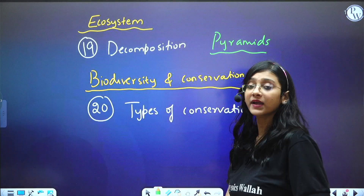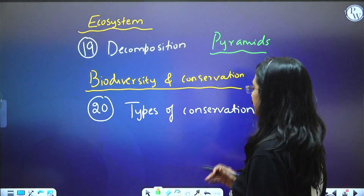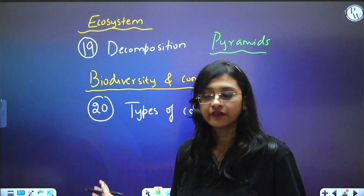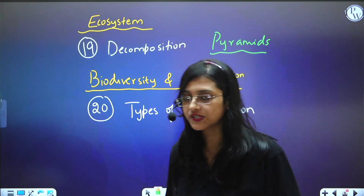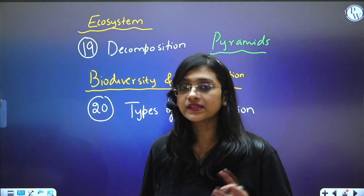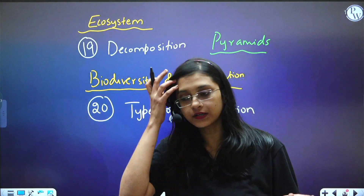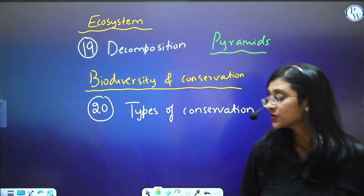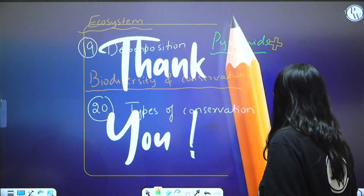Under Biodiversity and Conservation, types of conservation — ex situ and in situ conservation and their respective examples — questions are coming every year from the past three-year question papers. So these are the top 20 topics you must study for NEET 2024. That's all for today — let's meet in the coming video. Until then, bye.